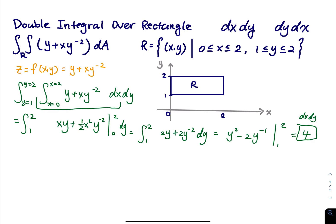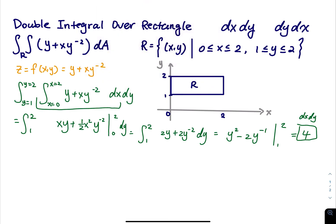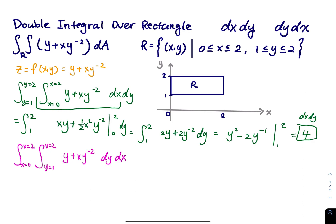Now, can we do dy dx instead? The answer is yes. The double integral of y plus xy to the negative 2 dy dx with y from 1 to 2 and x from 0 to 2 should give the same answer.